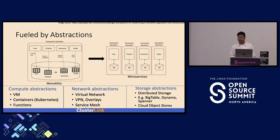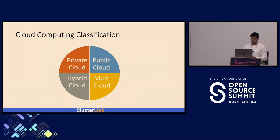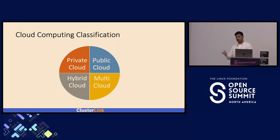These abstractions have hugely simplified things for application developers and businesses to scale up their applications based on demand and make deployments simplified without worrying about the underlying infrastructure. Enterprises typically use cloud computing in the following ways: private cloud, where companies manage their infrastructure themselves, and public cloud, where the whole IT infrastructure is managed by a single cloud provider like AWS, Azure, or GCP.